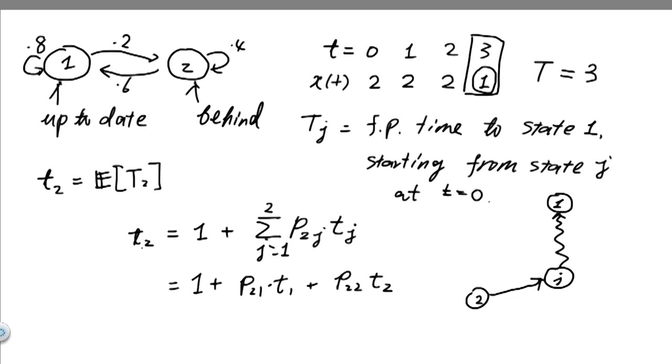Now by this definition, we can see that this is simply 1 plus p21 times t1 plus p22 times t2. Now the definition of tj says t1 must be 0, because by definition, if we start from state one, we are already in state one. So the time to reach state one is simply 0, so this term disappears.